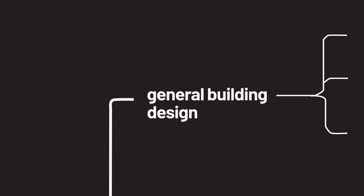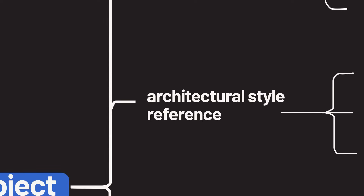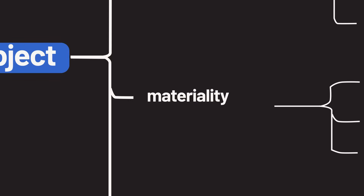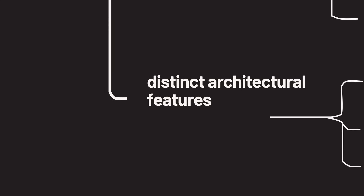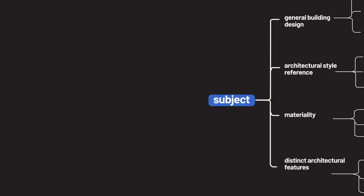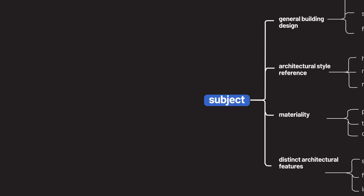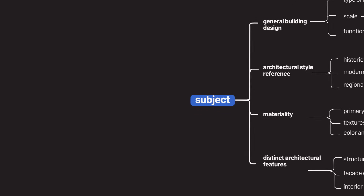Now let's talk about subject — the central focus of your image. In the context of architecture, this includes not only the building itself but specific elements that define its character. For example, overall building design includes architectural styles such as modern, brutalist, or art deco. Also consider architectural features like balconies, columns, windows, or unique roof structures. And of course materials — describing materials can highlight aspects like glass facades, concrete walls, or wooden accents.